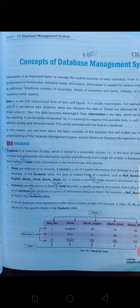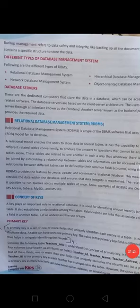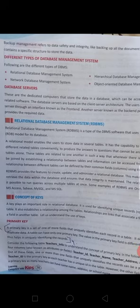Rows are referred to as records, and a single record is also known as a tuple. Columns are referred to as fields, and a field is also known as an attribute. In computers, we have different types of Database Management Systems: Relational Database, Hierarchical Database, Network Database, and Object-Oriented Database. In this chapter, we will read about Relational Database Management System, RDBMS.